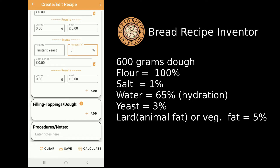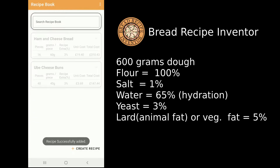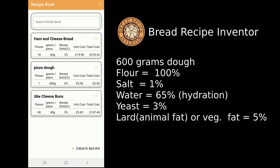Next, you can click on the Calculate button to check how many grams each ingredient is. If you click on the Save button, your recipe will be saved and you'll come back to the recipe book. Let's check out the recipe of the pizza dough.